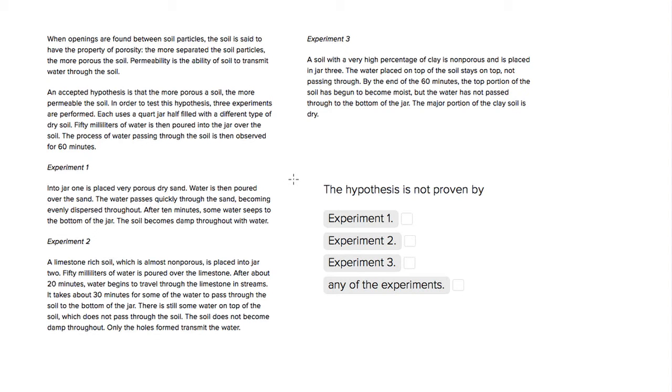This is Sophie Heller, and this is an ACT science question. The question is asking us to look at the hypothesis proposed in paragraph 2 and see whether the experiments prove it or don't prove it. So we're looking for experiments that don't prove it.